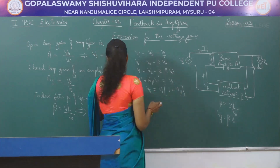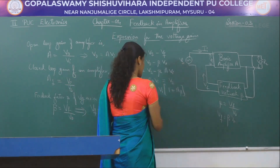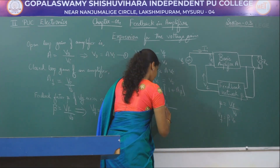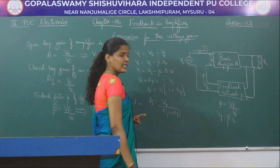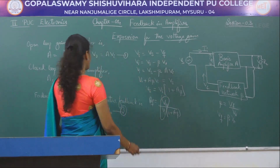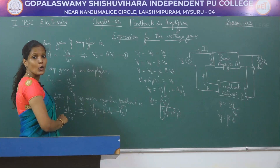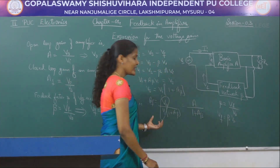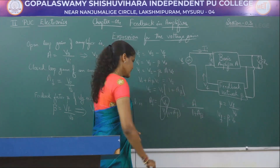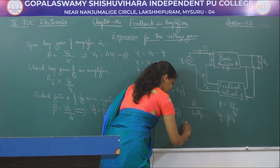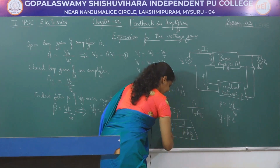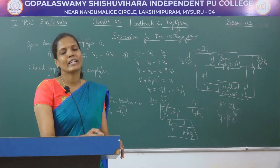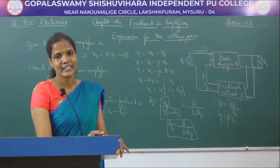Substituting this expression into the closed loop gain equation: AF equals V0 divided by Vi times (1 plus A·beta). Now V0 divided by Vi is nothing but the open loop gain A. So AF equals A divided by (1 plus A·beta). This is the final expression for the closed loop gain: AF equals A divided by (1 plus A·beta), where A is the open loop gain and beta is the feedback factor.